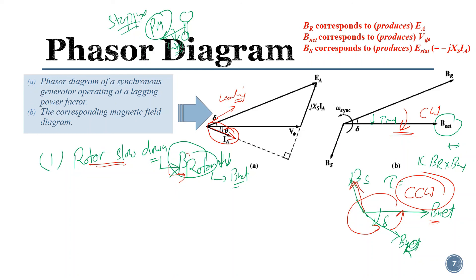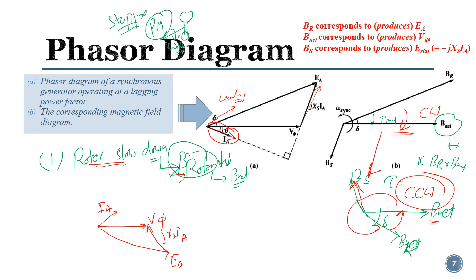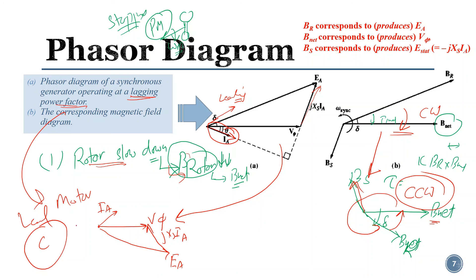The second change is that the direction of current is inverted. If it was a lagging power factor in the generator case, in the motor case it becomes leading. So if this is the direction of current in the generator, in the motor case the current becomes leading. In the leading case, V_phase and E_a along with jX_s·I_a form the phasor diagram for the motor — a reversal of the generator case. A generator operating at lagging power factor corresponds to a motor operating at leading (capacitive) power factor.